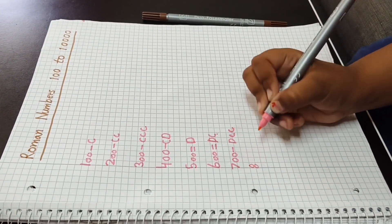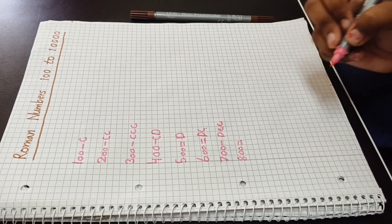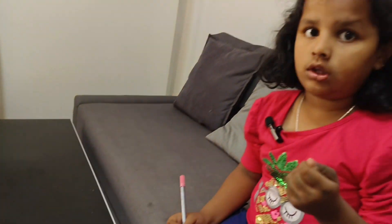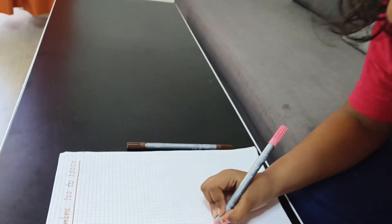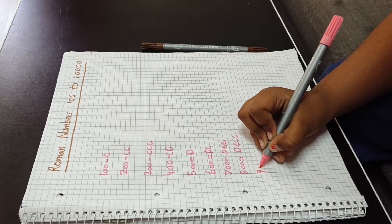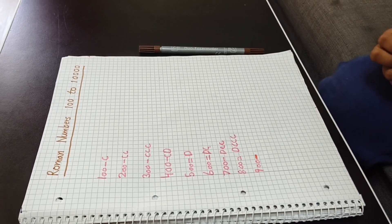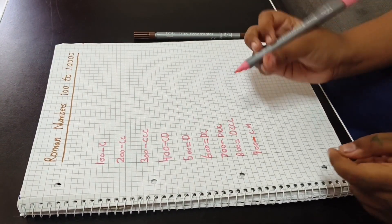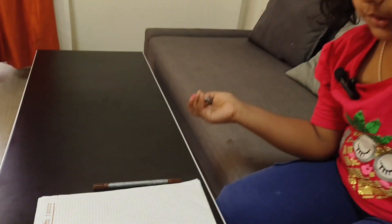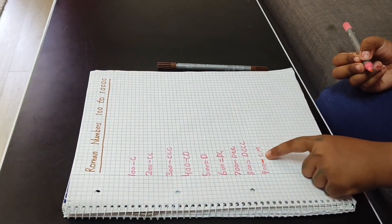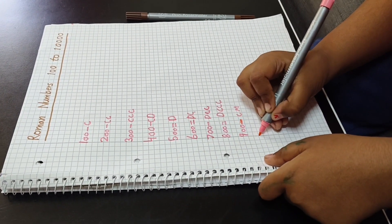800 — here is D, and 300 in Roman numerals is CCC, so I write DCCC. Now 900 — it's CM. 1000 is M, so I write M. Here is CM for 900.